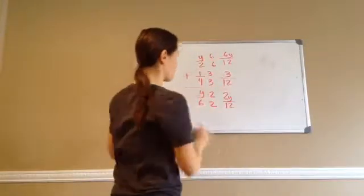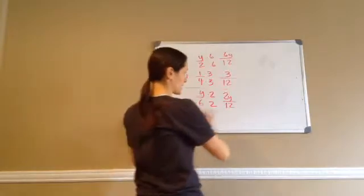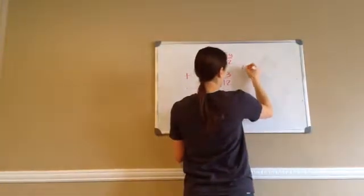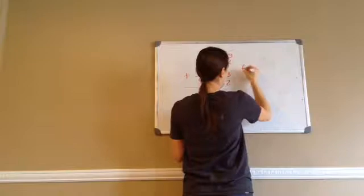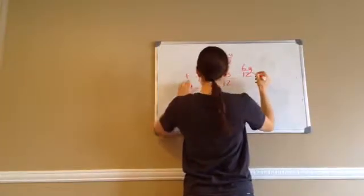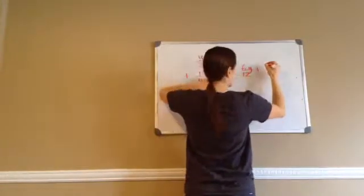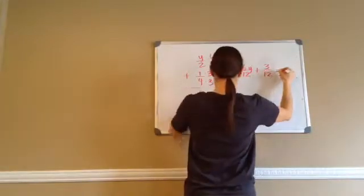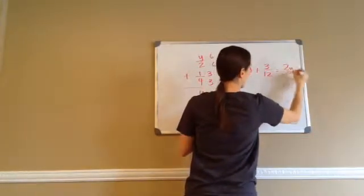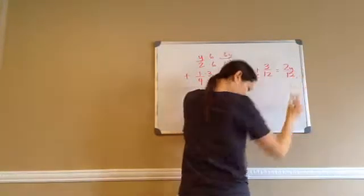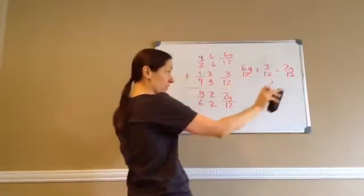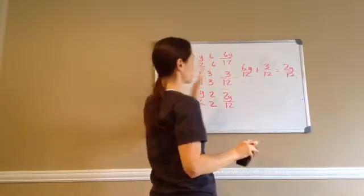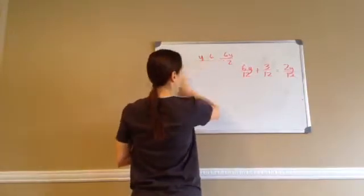Once I get it into this form, I like to write it horizontally. That may confuse you, but: 6y over 12 plus 3 over 12 equals 2y over 12. You do not want to reduce or anything like that because then you go right back to the original form. So keep leaving it like that.